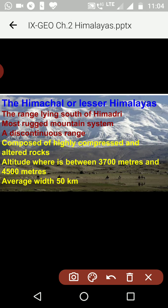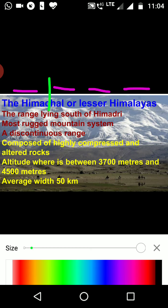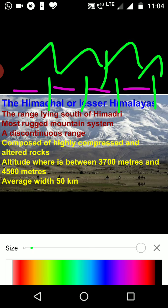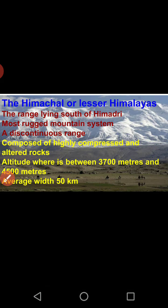Himachal is a discontinuous range — there are many passes and gaps in it. This range is made up of highly compressed and altered rock. When the plates dashed together, the sedimentary rock combined with lava and changed completely, forming metamorphic rock. So this range is composed of metamorphic, altered, and highly compressed rock.